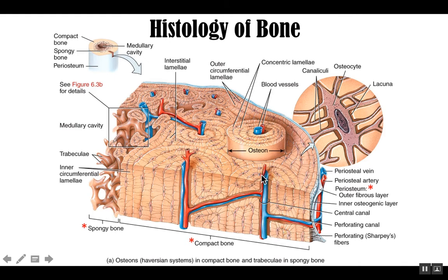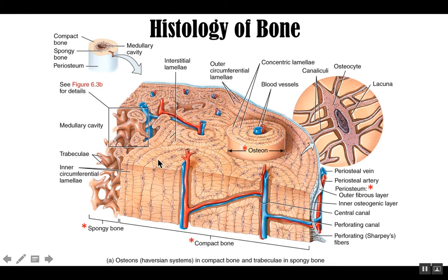Compact bone is made up of units called osteons. These osteons are cylindrical structures with layers of matrix — you can see this layering — and the layers surround a central canal. In that central canal, you see blood vessels. A bone is a living organ; it needs oxygen and nutrients, so you have to distribute blood throughout the bone. These layers are known as concentric lamellae — a lamella is a layer — so these are circular layers forming that osteon. Those cylindrical units give compact bone its strength.